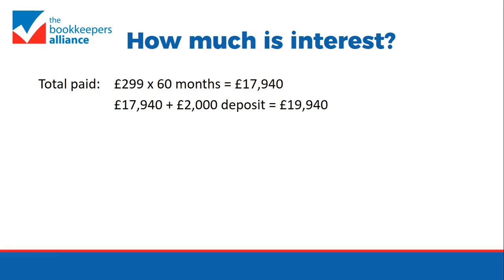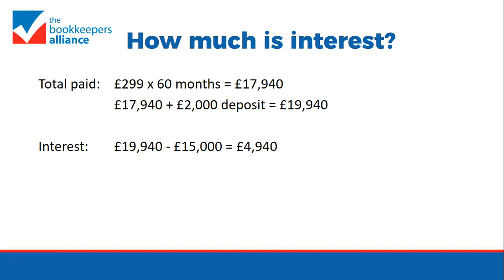So in total he's paid £19,940, and the cash price of the van was £15,000. So the interest he will pay over the total term of the agreement is £4,940.